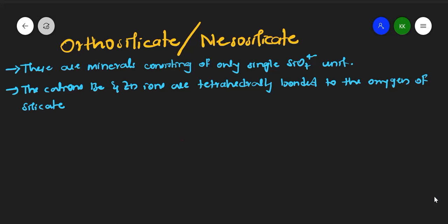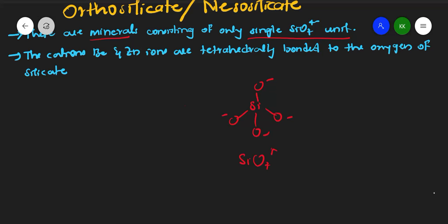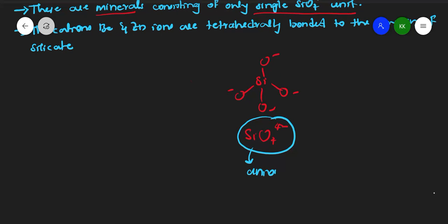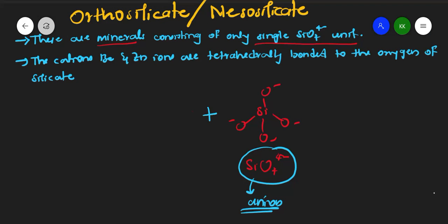Welcome to this class. In this video we are going to discuss about orthosilicates, also called nesosilicates. These are minerals consisting of single SiO4 units. The SiO4 4- anion is the fundamental structure here. Since it is negatively charged, we call it an anion. Orthosilicates consist of this SiO4 4- anion along with some metal cations.